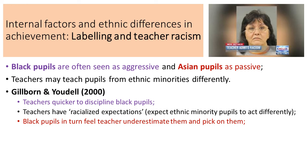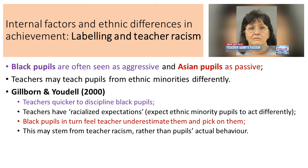Black pupils in turn feel teachers underestimate them and pick on them - they may feel hard done by, bullied, or victimized. This may stem from teacher racism rather than pupils' actual behavior. The pupils might actually be behaving in a very normal fashion with no differences between black Asian minority ethnic pupils and members of the white British majority, but it's the teachers' innate racism that may be causing the issue.